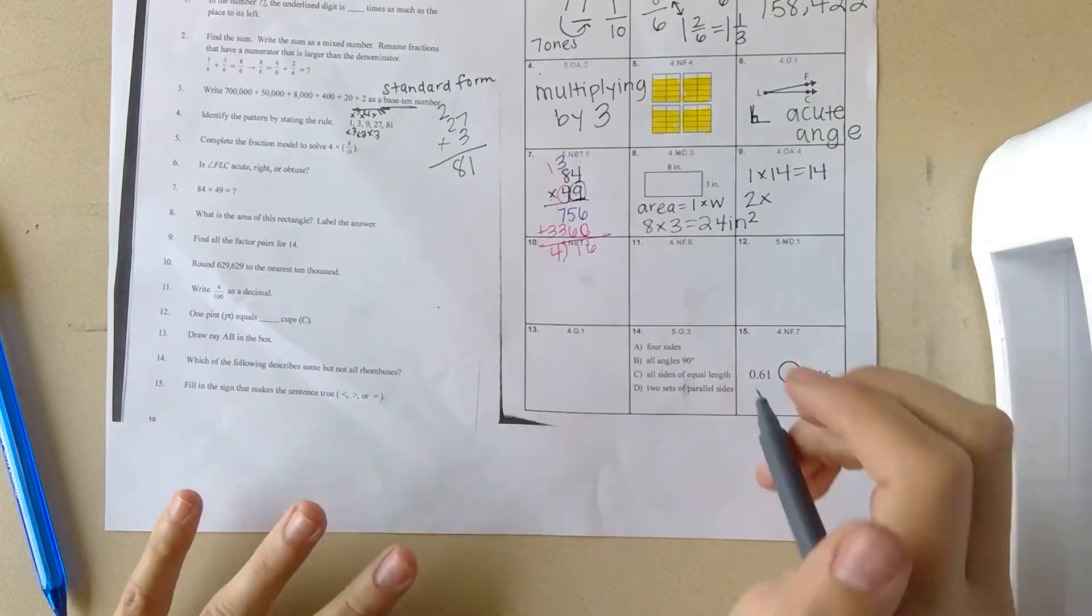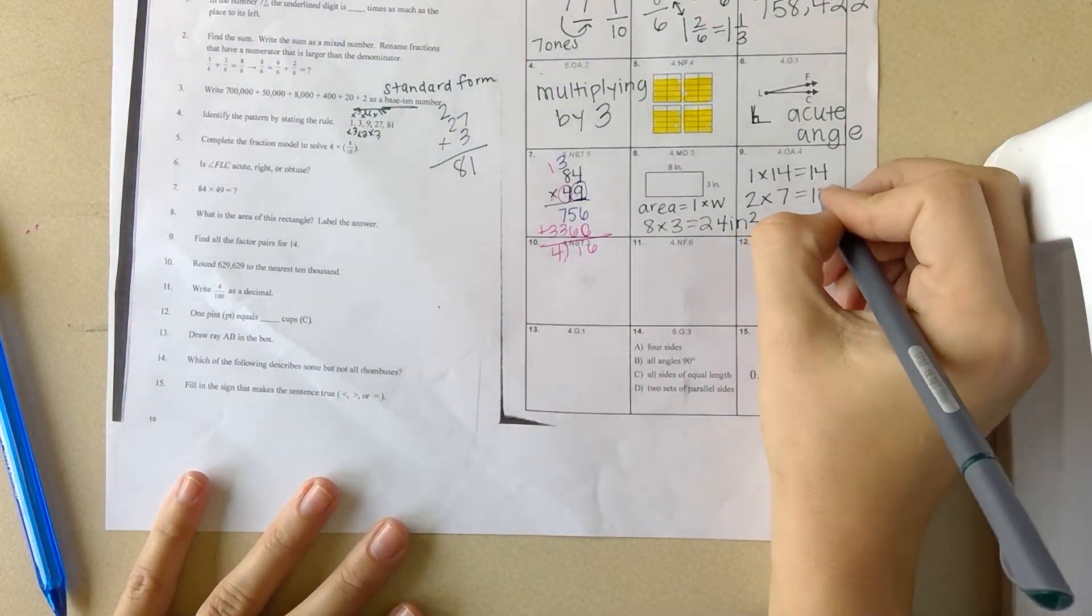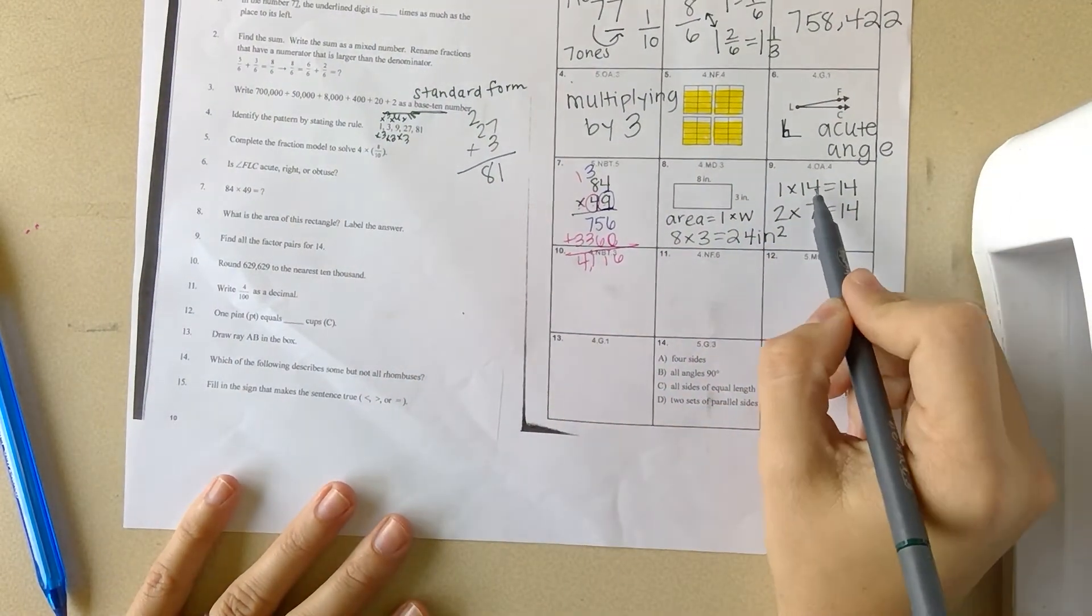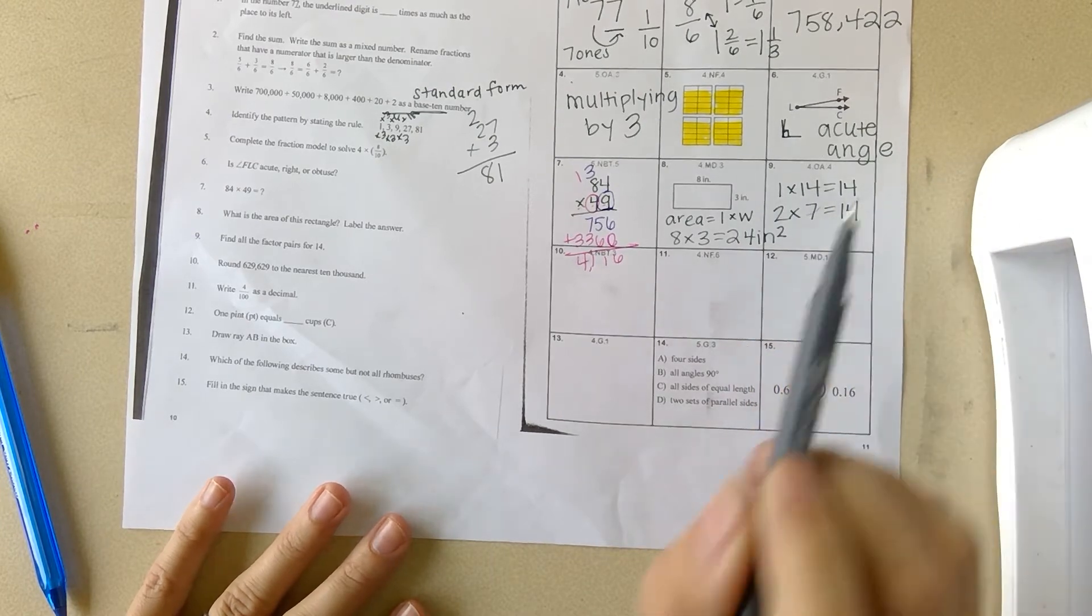Two times what will get you to 14? Two, four, six, eight, ten, twelve, fourteen. That would be 7. So these are your pairs to get 14.